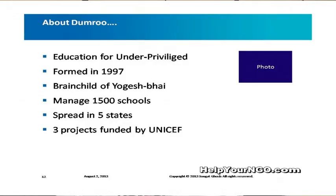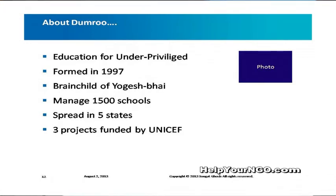The same thing, if you were to represent it, this is what you would do. You'd put a photograph there — a very small photograph specific to the person or the project — and you would say, these are the five things. This is fabulous. Three projects are funded by UNICEF — credibility statement. 1500 schools that you work with. One slide. This will give you credibility. It's not running into lines. It is within the rule of eight, whichever way you look at it.